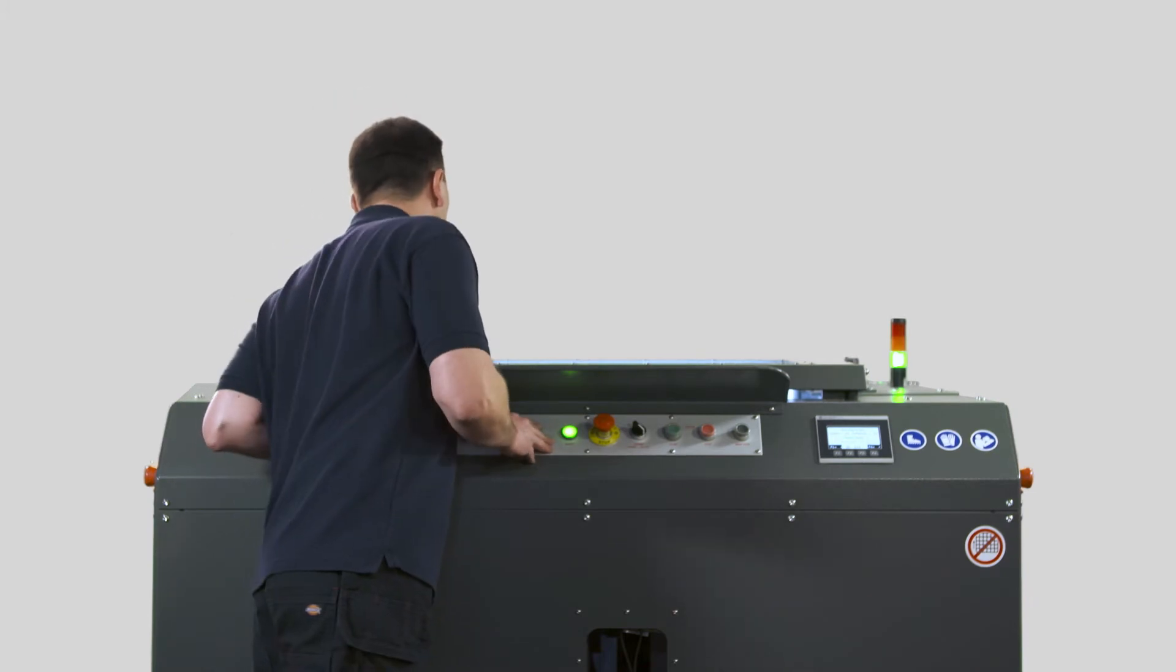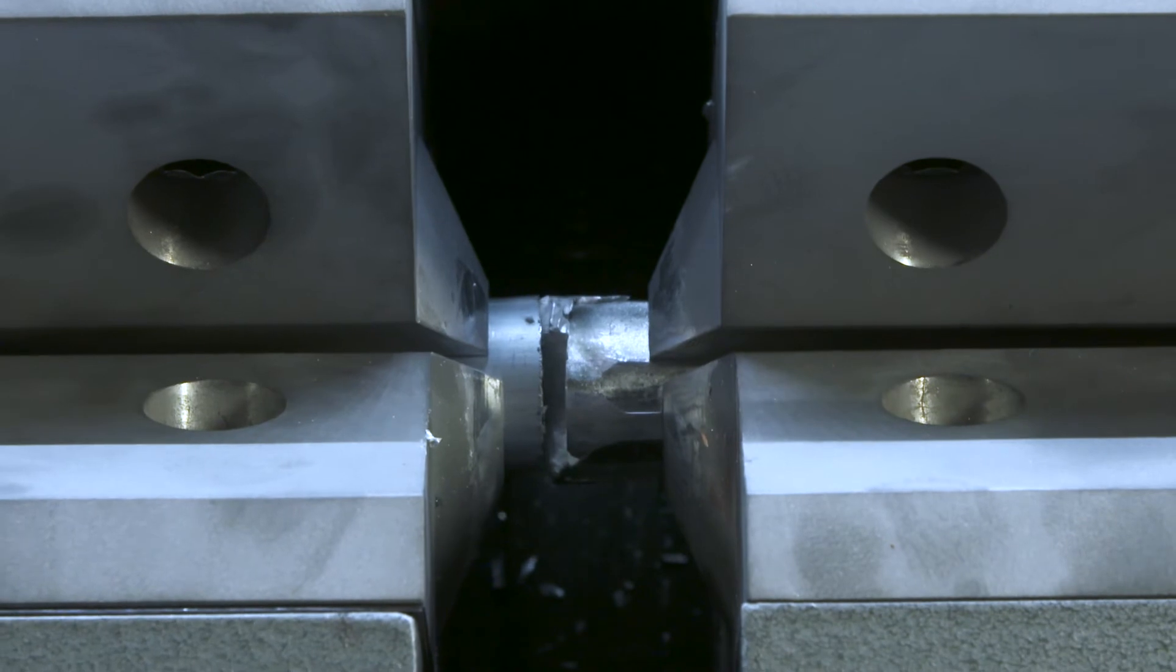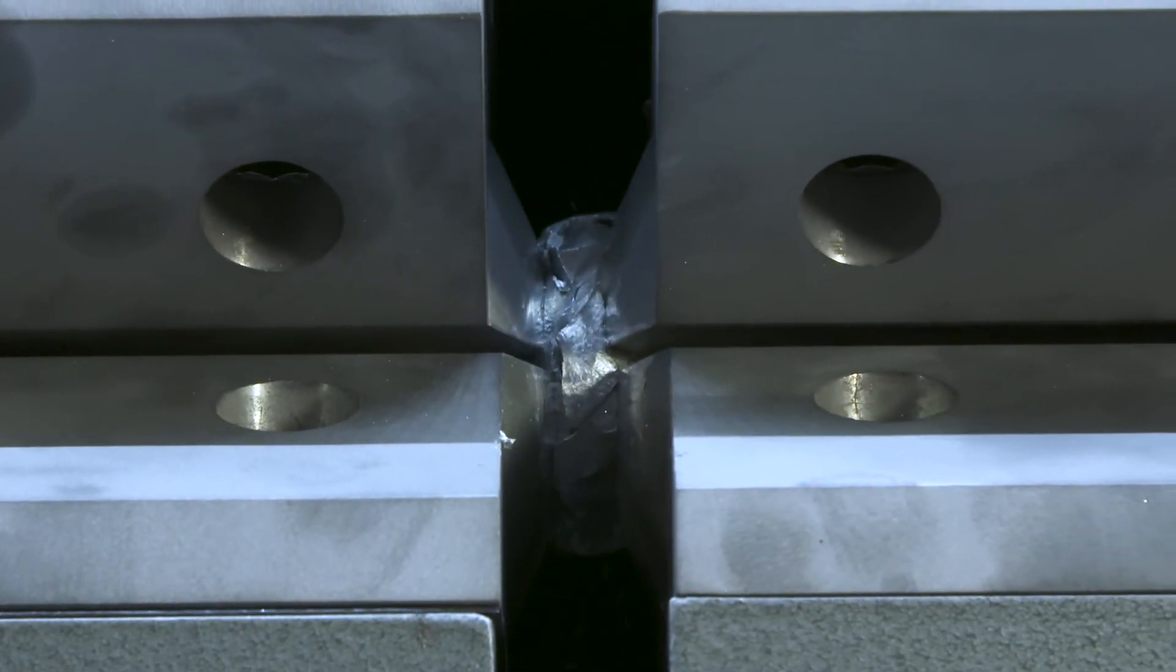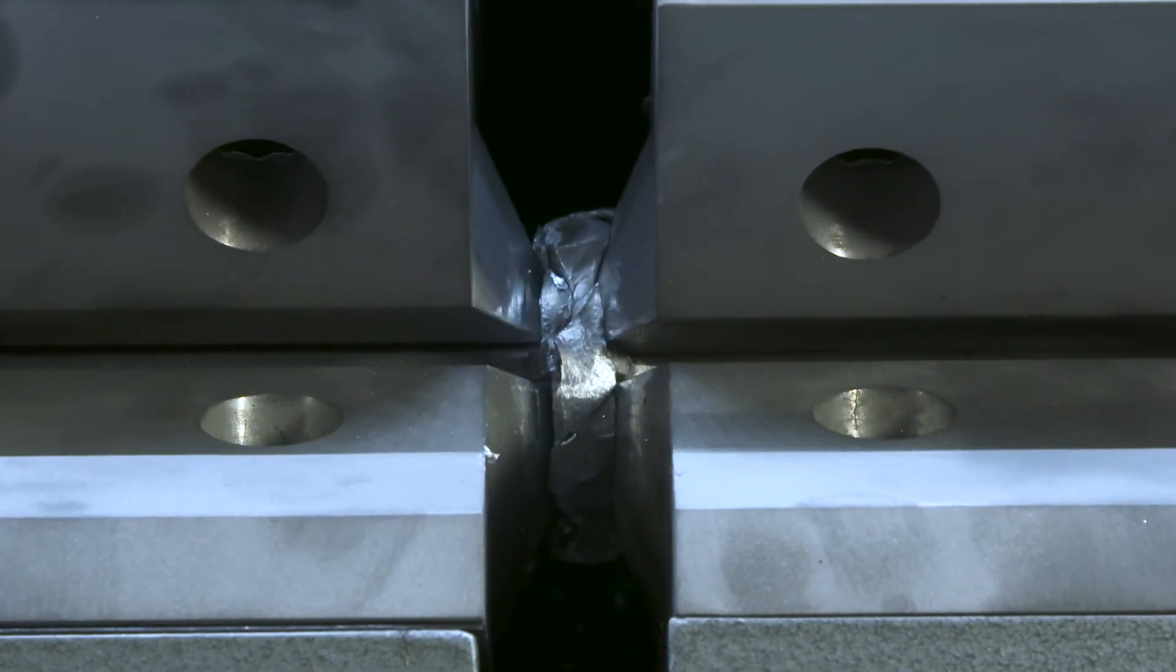When the weld sequence is activated, the material is gripped by the dies and fed forward. As the ends of the material are pushed against each other, the surface impurities are squeezed outwards from the core of the material, forming a flash.